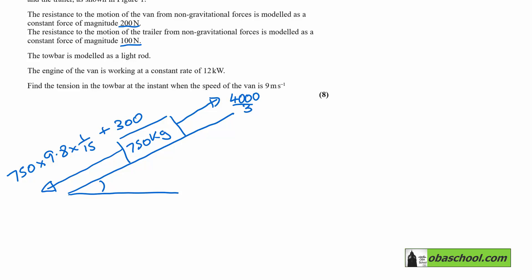And then we can use F equals M A because the object will be accelerating. I don't know for sure that it's accelerating that way, but I'm going to assume it. And it would come out in the wash when we do the math anyway. So the resultant force is 4000 over 3 take away 750 times 9.8 times 1 over 15 plus 300.